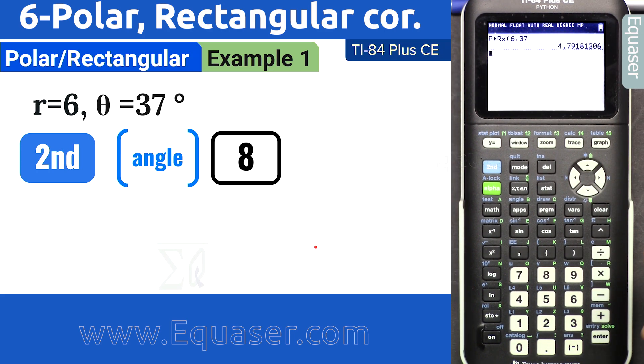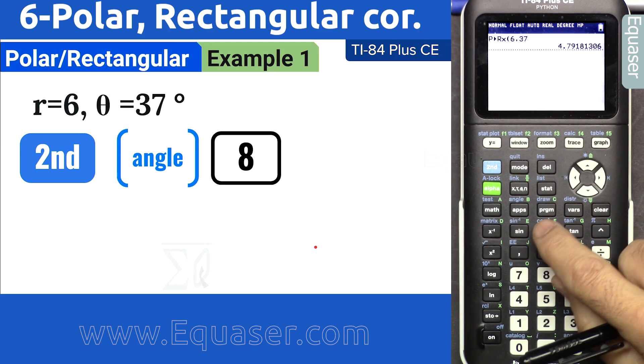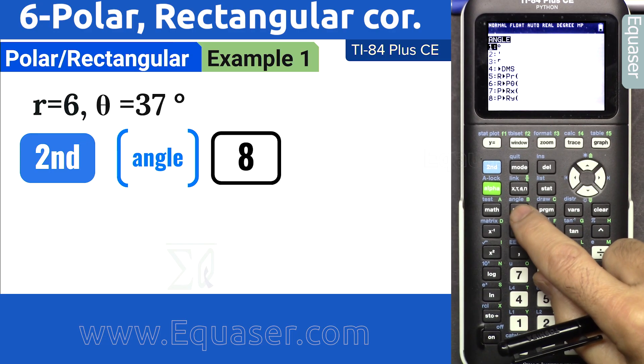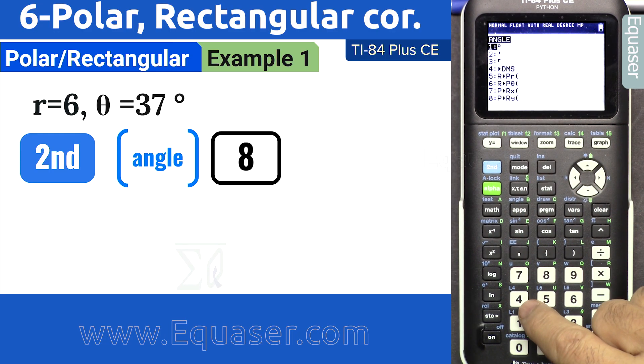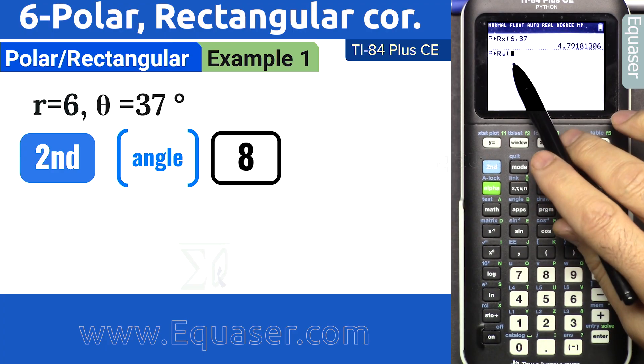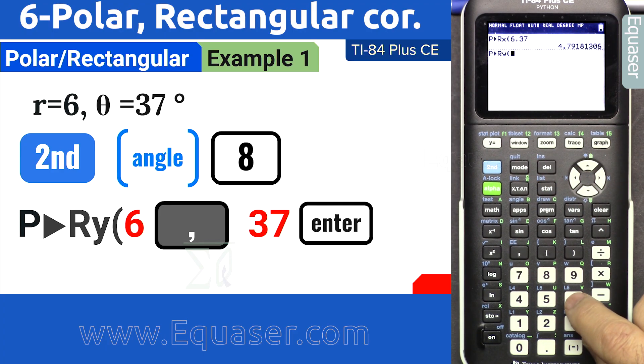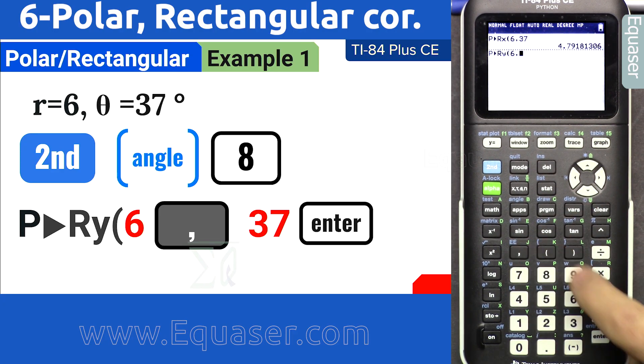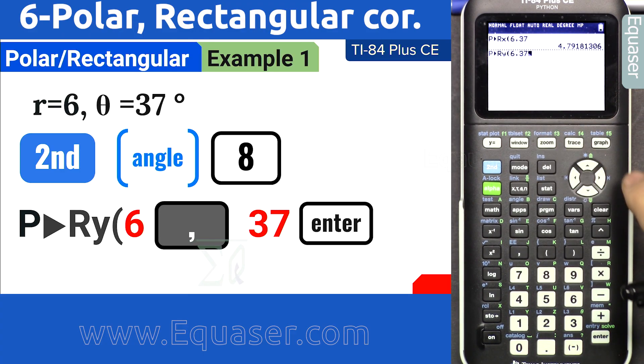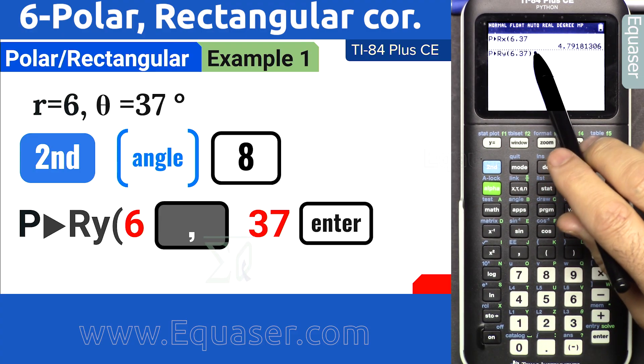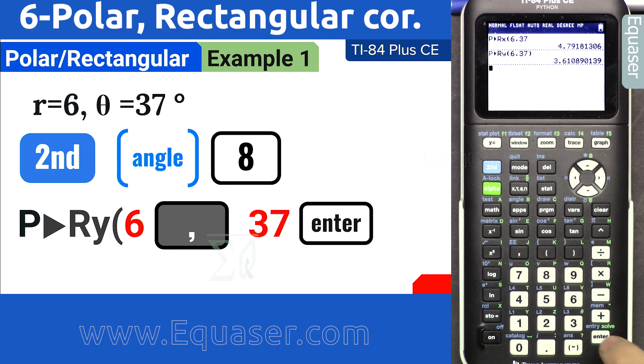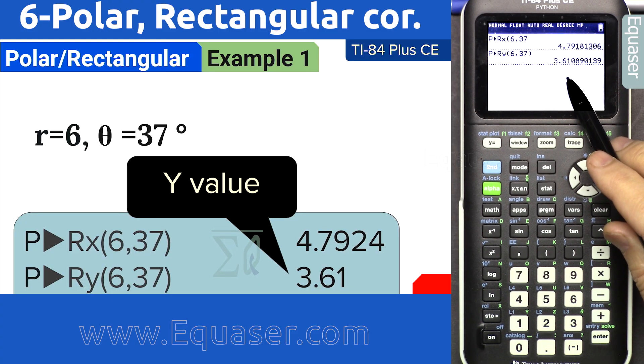Now let's get the angle. Second function angle, this time press 8 because we want to get y. The same way, enter 6 comma 37. We don't need to close it unless you want to use it in other calculation. This is our y value.